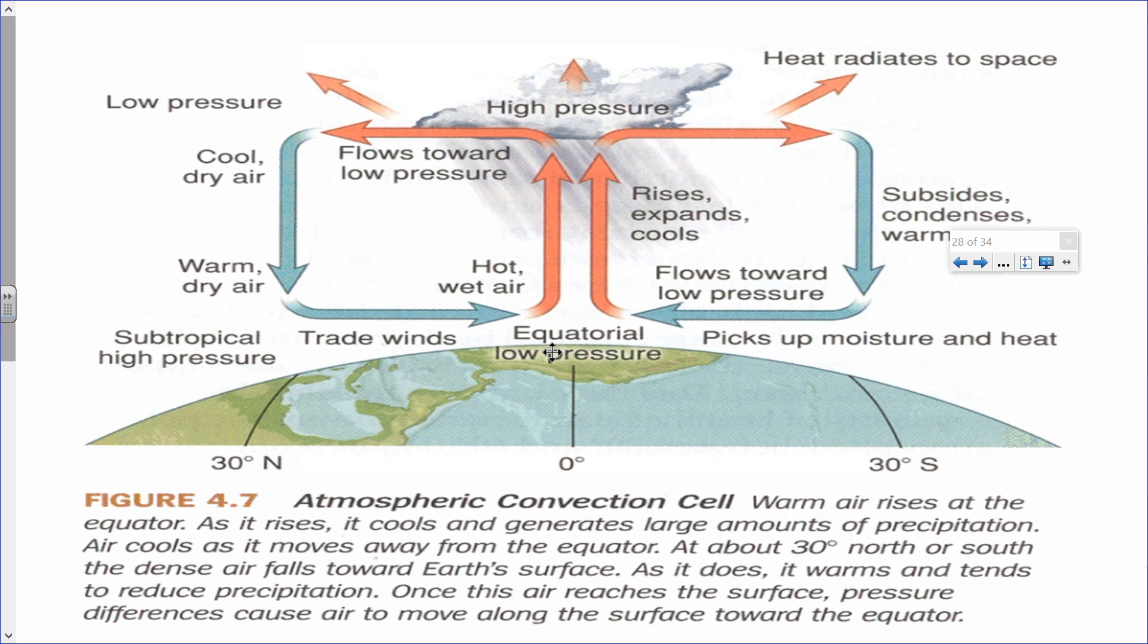The heating of the earth's surface causes the air to rise and forms an area of low pressure. As it rises, it cools, condenses, expands, forms clouds, and then you have precipitation. Now as it rises, eventually it's going to cool, and as it cools the air becomes denser, and when it becomes denser it comes back down.